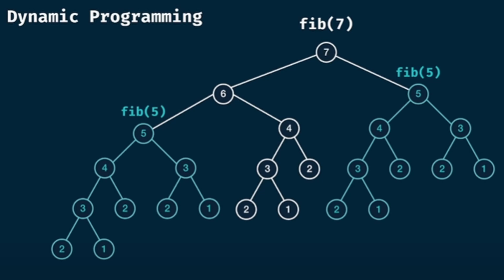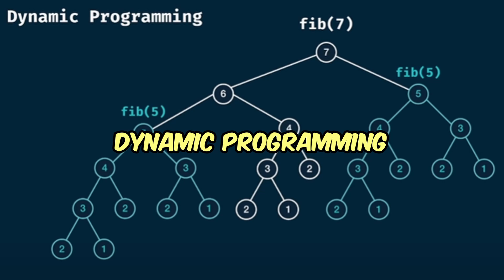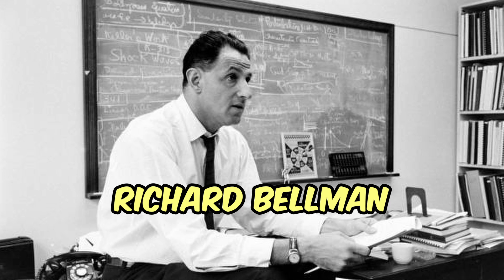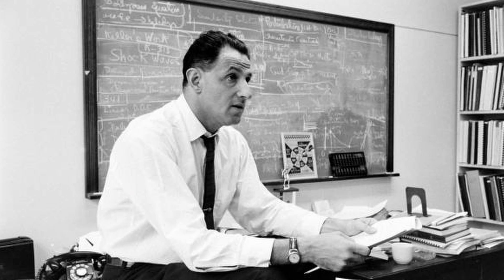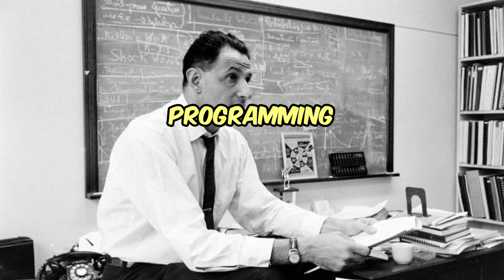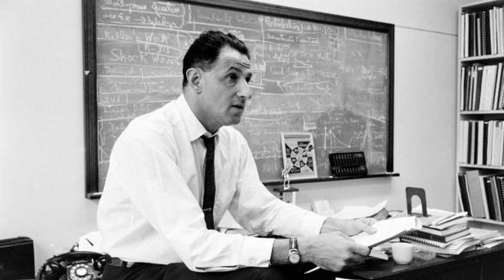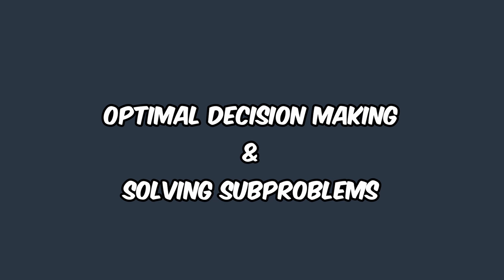I know this might sound complex at first, but to get a better understanding, let's dive into the origin of the phrase dynamic programming and what makes it dynamic. The term was coined by mathematician Richard Bellman in the 1950s. The term doesn't refer to programming in the coding sense — Bellman used programming to signify planning and decision-making. Dynamic was chosen to highlight the ever-changing nature of the problems.